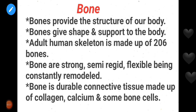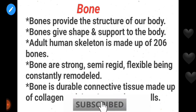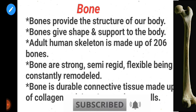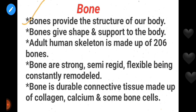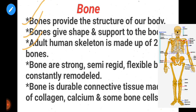Hello friends, welcome to my YouTube channel. Today I am going to explain about bones. Our topic is bones. The adult human skeleton is made up of 206 bones. How many bones? Total 206 bones in the adult human skeleton.